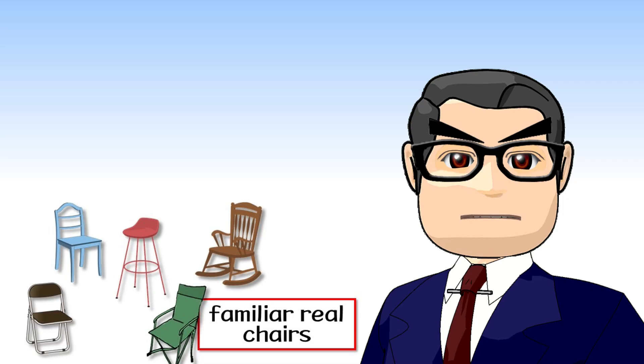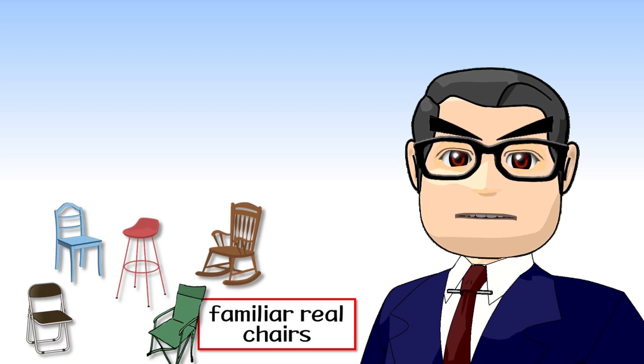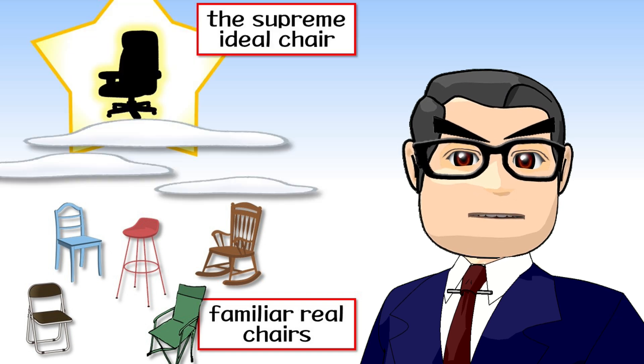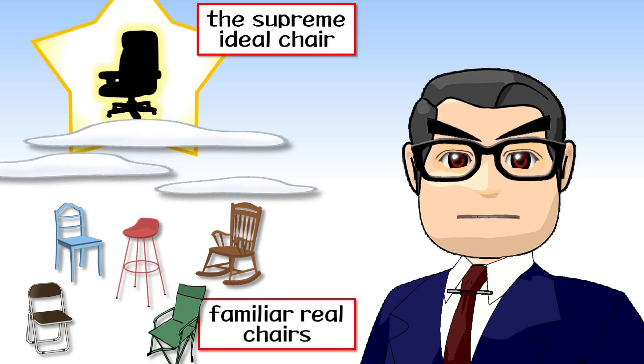What's it all about? For example, there are various chairs in the world, big and little or high and low. However according to Plato, the supreme ideal chair exists in heaven, while chairs in this world are just imitations.